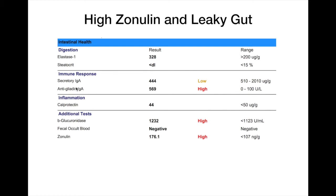When looking at gliadin, we also look at zonulin — this is a marker of leaky gut, and this is at very high levels here. Whenever you see high levels of anti-gliadin antibodies and high levels of zonulin, this is probably relating to celiac disease and definitely needs further investigation. High zonulin levels indicate leaky gut, which is the prime cause of conditions such as autoimmune conditions, rheumatoid arthritis, and skin problems. Basically, the bacteria, toxins, and things that should be eliminated through the gut are getting into your bloodstream, which creates an immune response in the body.